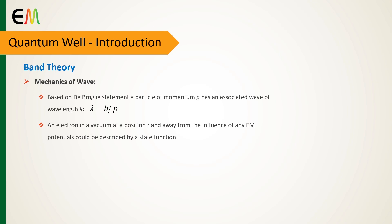An electron in a vacuum at a position r and away from the influence of any electromagnetic potential has a total energy that is just the kinetic energy, as described by this equation.